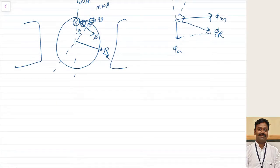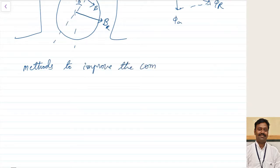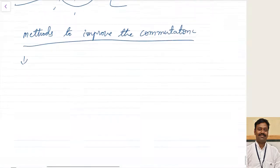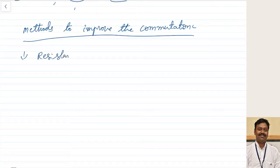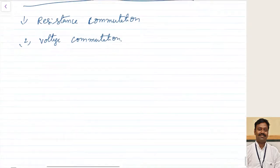Now, how to improve the commutation — what are the methods to decrease the effect of sparking at the brushes? There are two methods: the first method is resistance commutation, and the second one is voltage commutation.